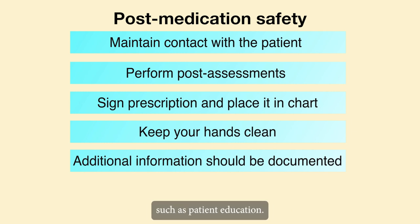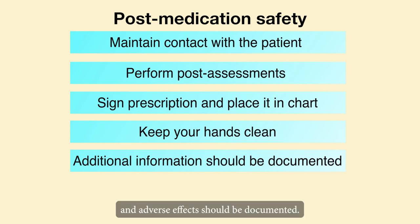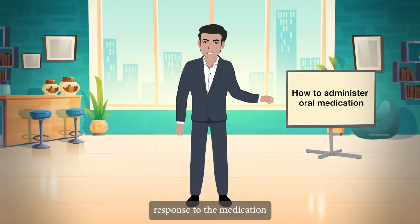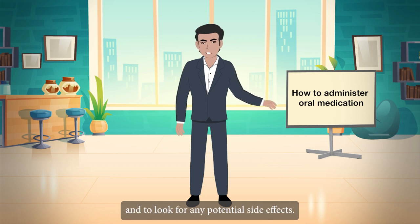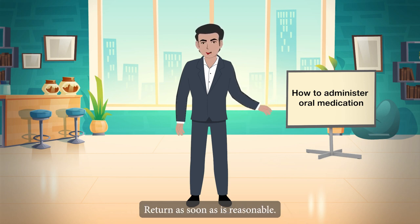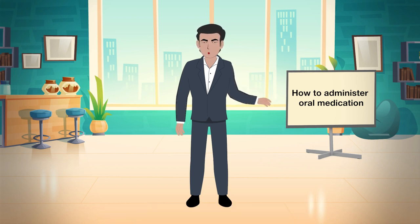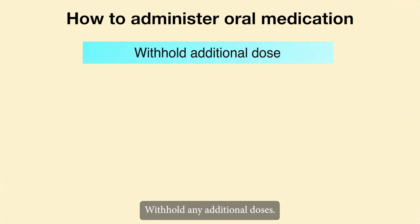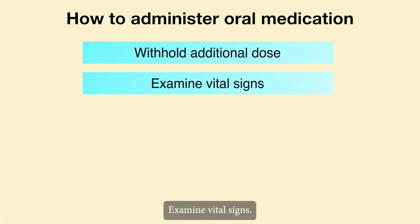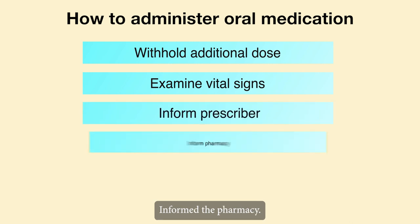Any additional information, such as patient education, reasons for not administering medication, and adverse effects, should be documented. Return as soon as reasonable to assess the patient's response to the medication and to look for any potential side effects. If the patient exhibits any negative symptoms, withhold any additional doses, examine vital signs, inform the prescriber, inform the pharmacy, and keep a record of the event.